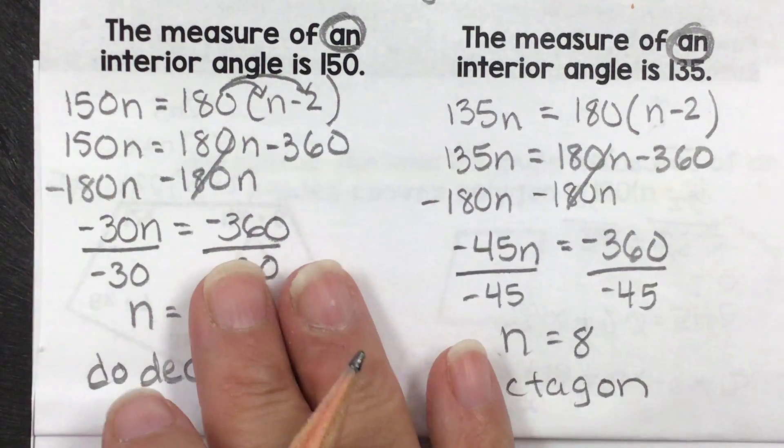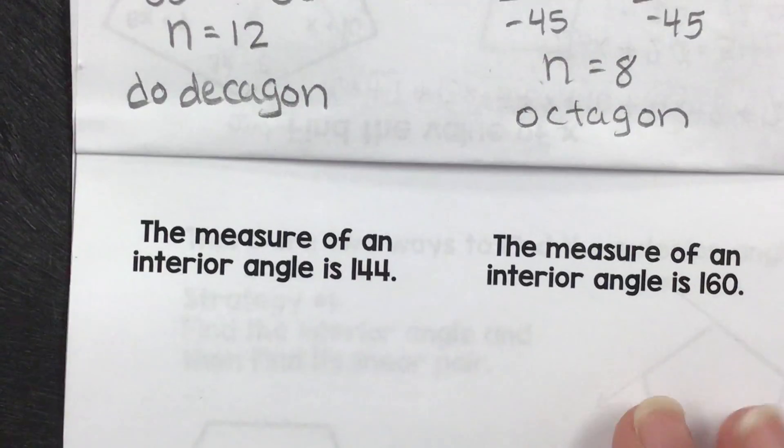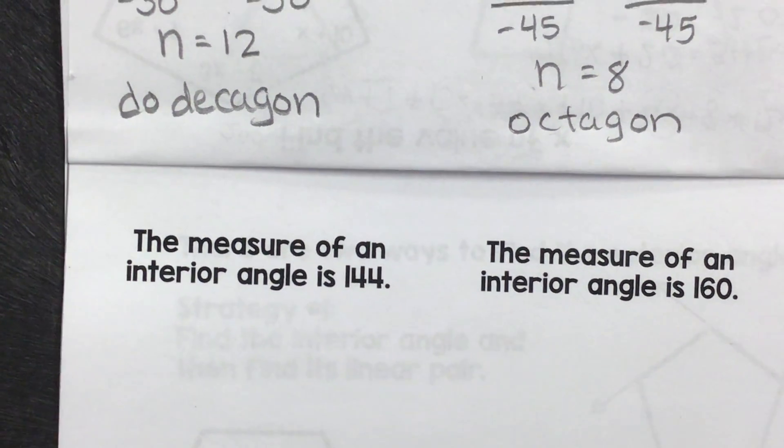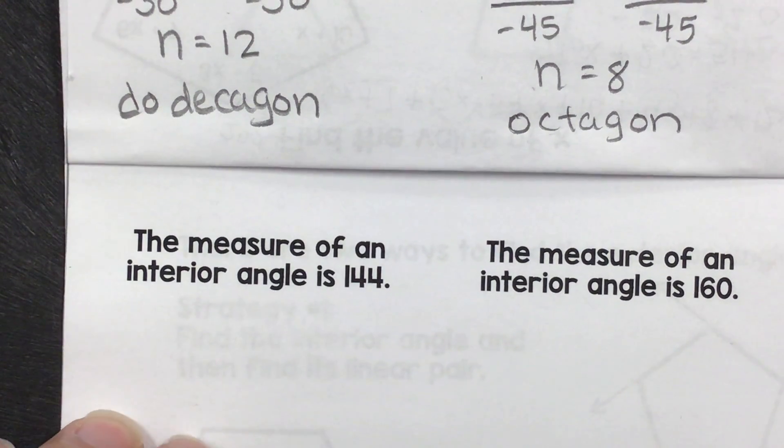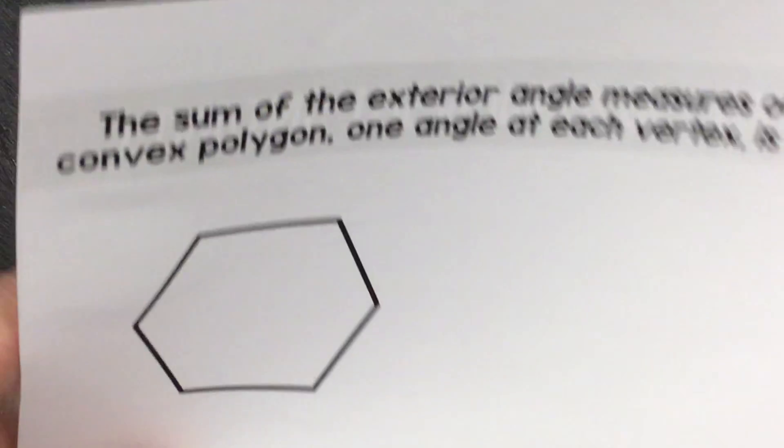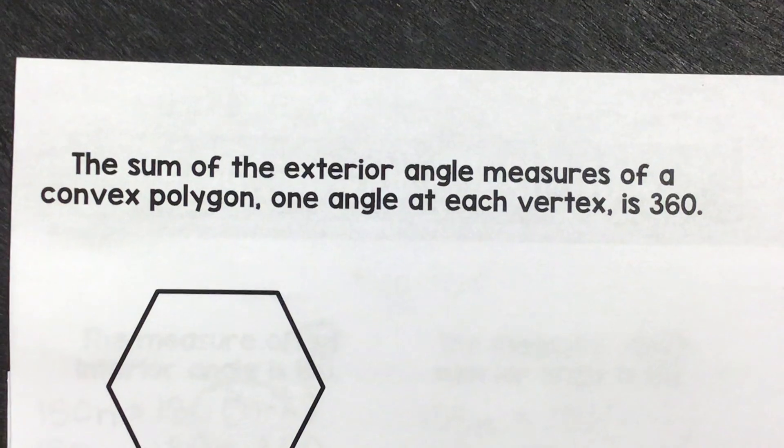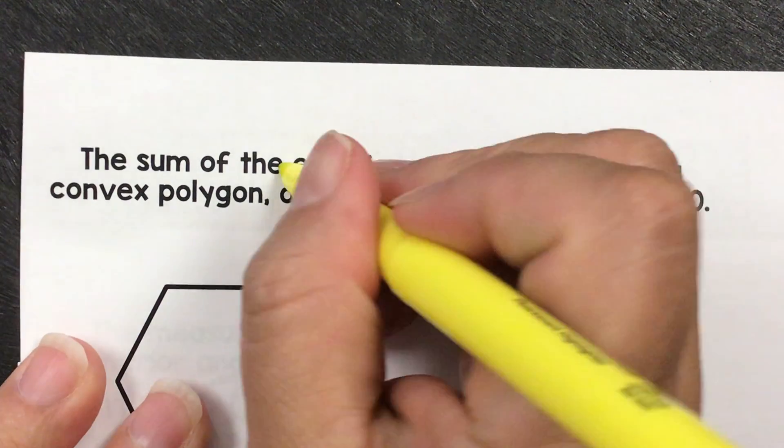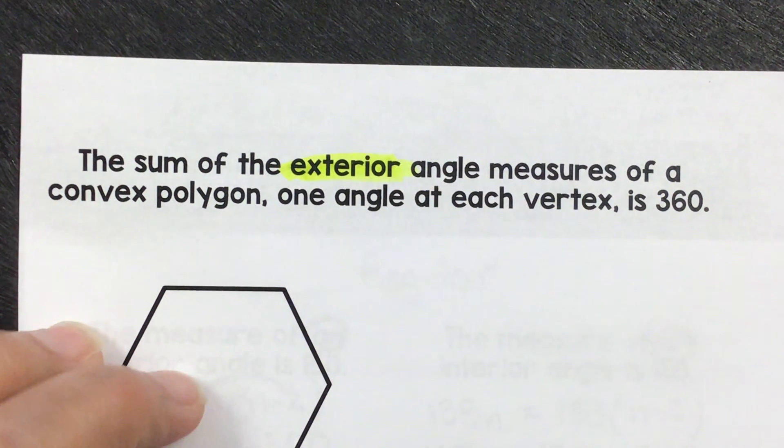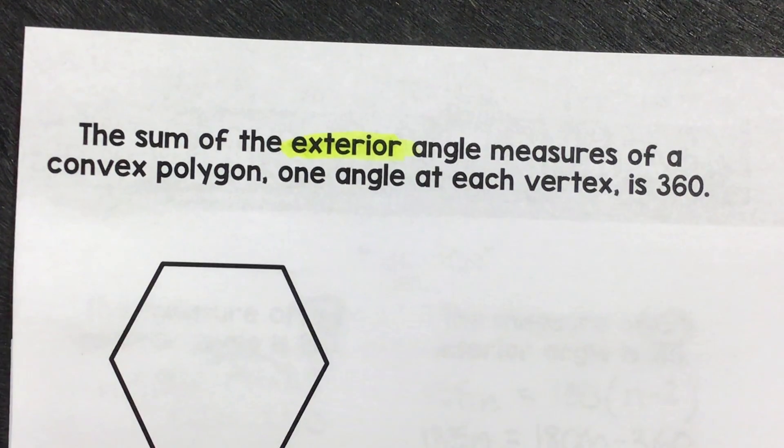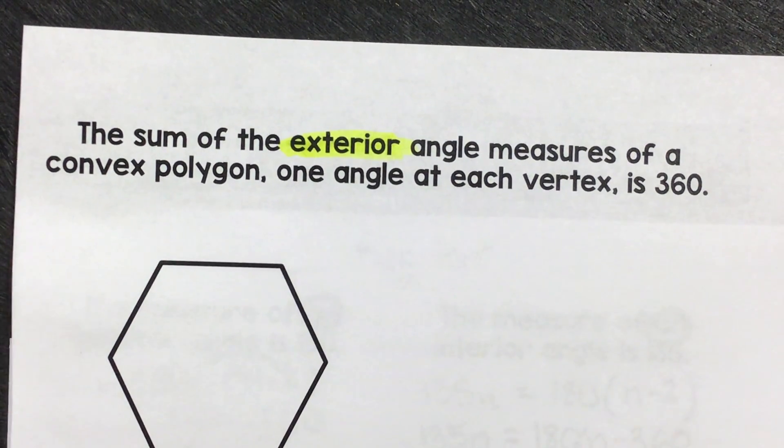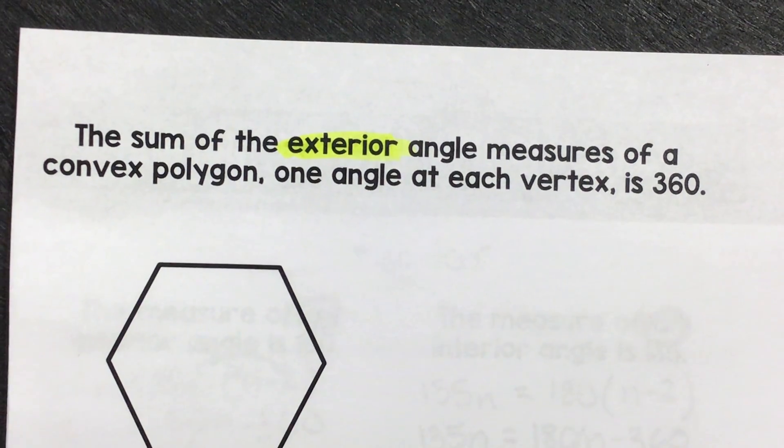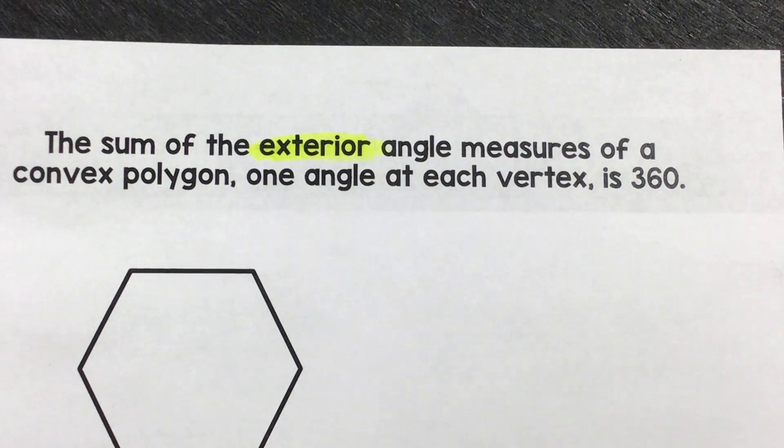I think that you understand the pattern, so I will not do the other two. It would still be the same. Let's move on to the next section. The sum of the exterior of the angle measures of the convex polygon, one angle at each vertex, is 360. So the exterior is always 360.